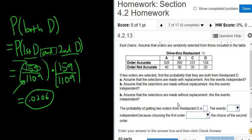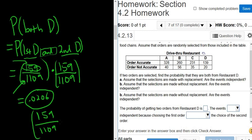And then it wants the same question, but without replacement. So without replacement, it's going to be pretty much exactly the same, except the answer will change. So it'll be 159 over 1109. That's the probability that the first one's from restaurant D. And so now you've already taken an order from restaurant D out. So it goes down. It becomes 158.